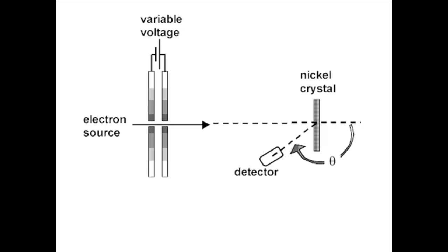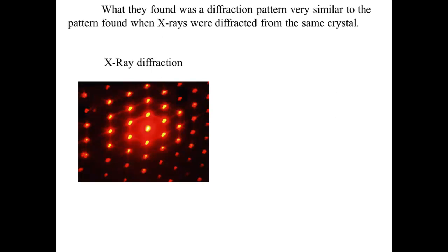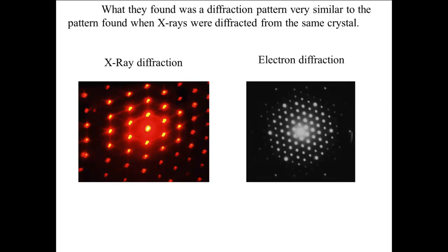The electron beam was aimed at the crystal and a detector which could be moved around the crystal detected the reflected electrons. The angle was measured to get the specific reflection. Davison and Germer found an interference pattern very similar to the one found from x-ray diffraction shown here on the left. The electron diffraction pattern, shown on the right, has many similarities although it is not exactly the same.